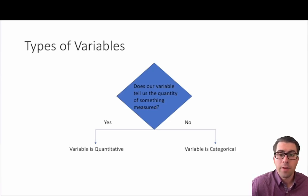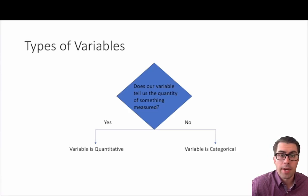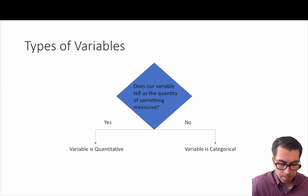If it does not tell us something about the quantity of something measured, we're dealing with a categorical variable. If it does provide us with the quantity of something that is being measured, we're typically dealing with a quantitative variable.